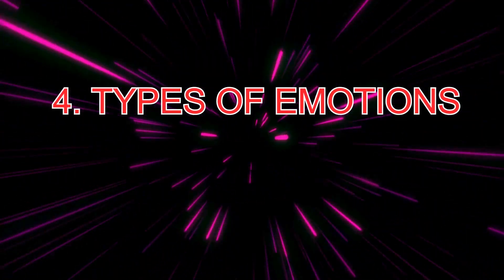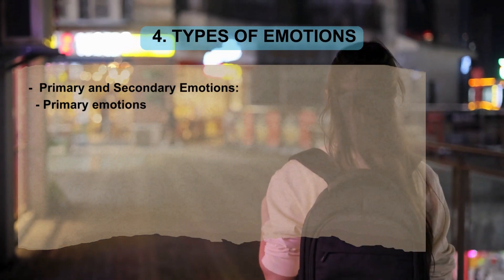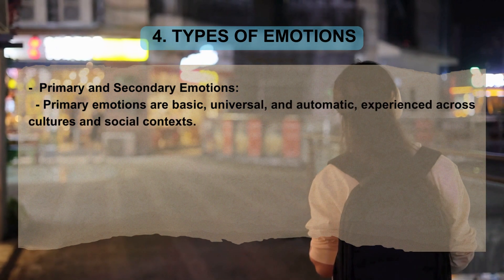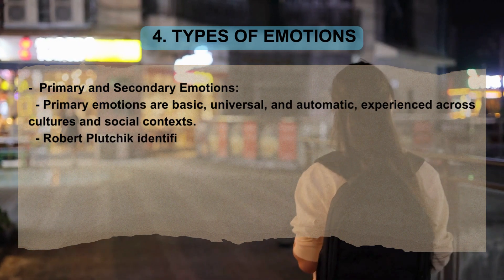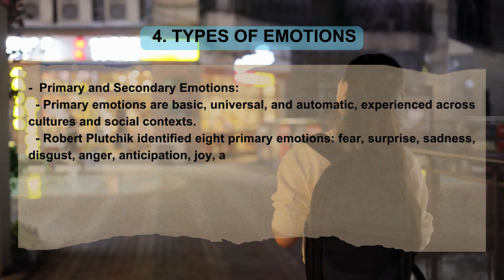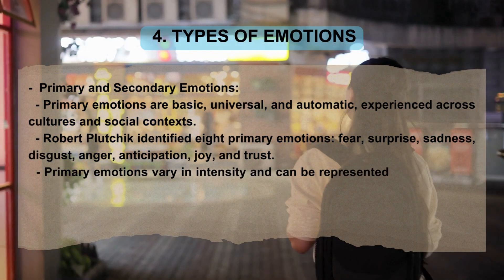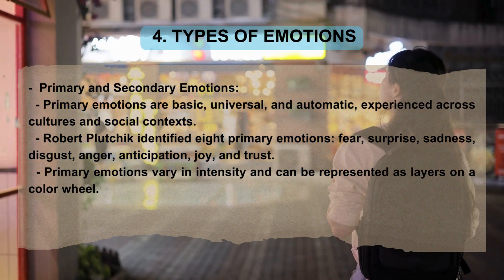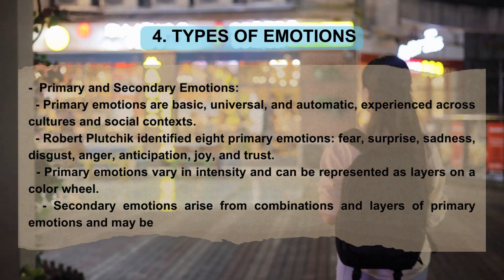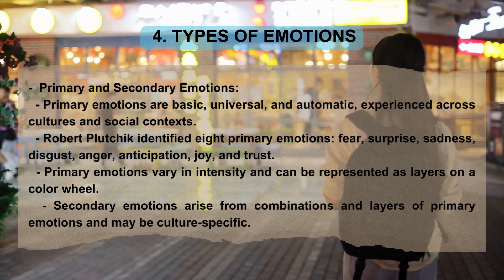Types of emotions — primary and secondary: primary emotions are basic, universal, and automatic, experienced across cultures and social contexts. Robert Plutchik identified eight primary emotions: fear, surprise, sadness, disgust, anger, anticipation, joy, and trust. Primary emotions vary in intensity. Secondary emotions arise from combinations and layers of primary emotions and may be culture-specific.